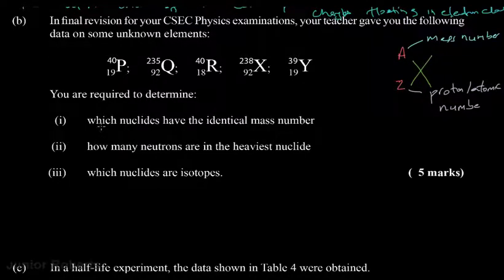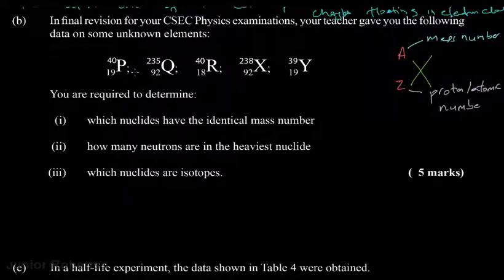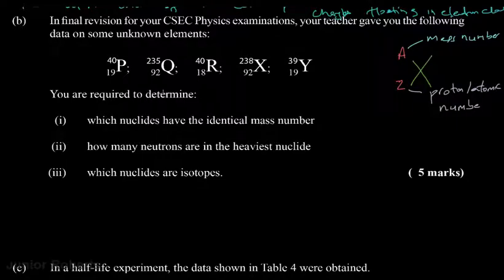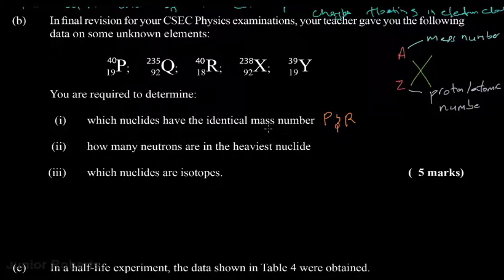We are to determine which nuclides have the identical mass number. We're going to look at the numbers at the top and see which are the same. In our example, P and R both have a mass number of 40, so therefore the nuclides P and R have identical mass number.